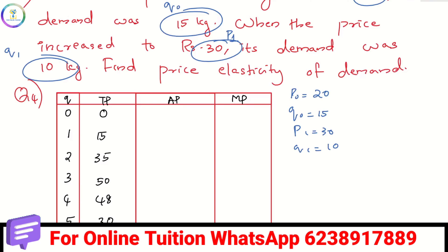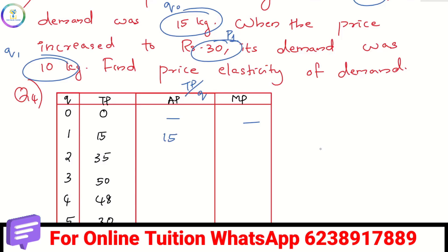The fourth question covers AP and MP. AP equals TP divided by Q. So: 15 divided by 1 is 15; 35 divided by 2 is 17.5; 50 divided by 3 is 16.6; 48 divided by 4 is 12; 30 divided by 5 is 6.